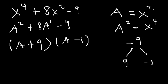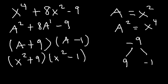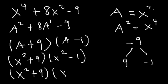So to factor it, it's going to be a plus 9 times a minus 1. Now we can replace a with x squared, so this is also equal to x squared plus 9 and x squared minus 1. x squared plus 9 we can't really factor — if we do, we're going to have imaginary numbers, so we can leave it as x squared plus 9. x squared minus 1, we can use the difference of squares technique to factor it. It's going to be x plus 1 and x minus 1.